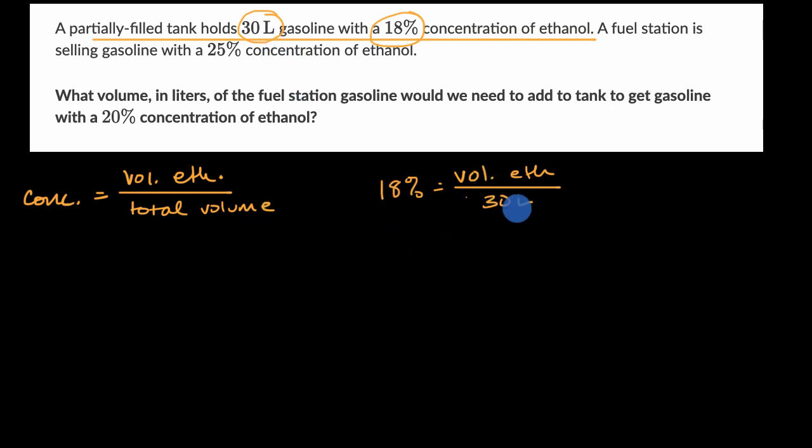So if we multiply both sides by 30 liters, that's going to give us the volume of ethanol because those two cancel. And what we get is 18% of 30, let's see, 18 times 3 is 54, so this is going to be 5.4 liters is equal to our volume of ethanol. Not only will this hopefully make it a little bit clearer how these three relate, but this is also likely to be useful information for the rest of the problem.